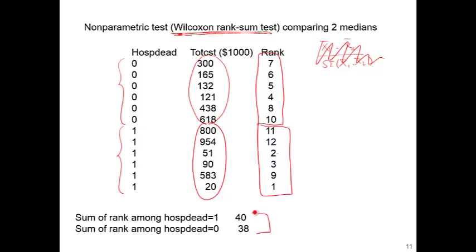And then you compare these two sum of the ranks. If survived patient, diseased patient have higher total hospital cost, ranking should be higher. So you actually compute the p-value comparing sum of the ranks between two groups. In this example, 40 and 38 is not large enough difference, so p-value might be large.